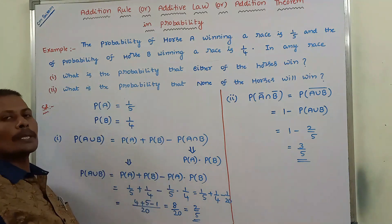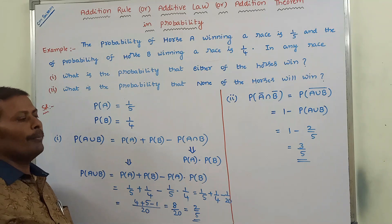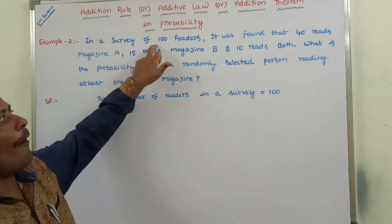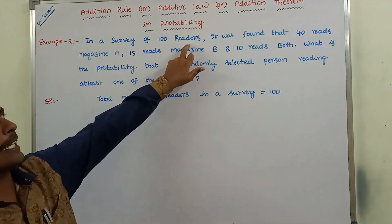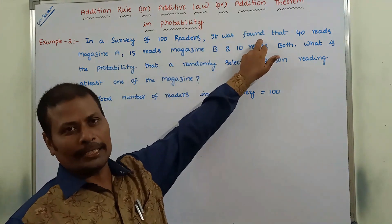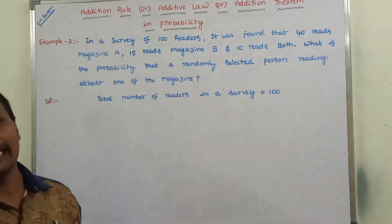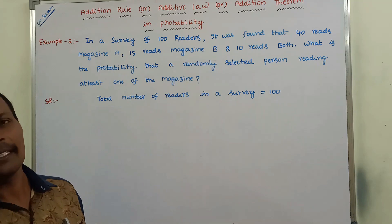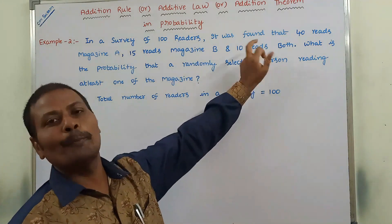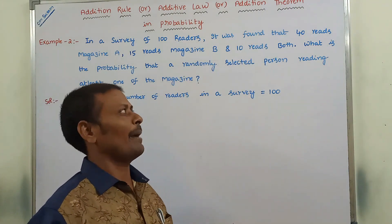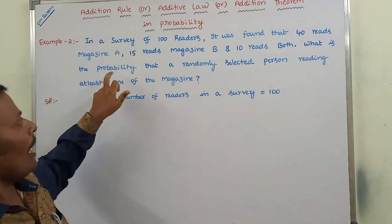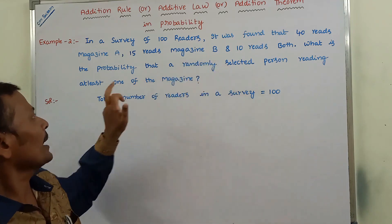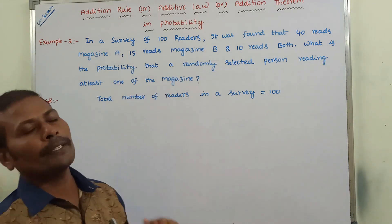The second problem: in a survey of 100 readers, it was found that 40 read magazine A, 15 read magazine B, and 10 members read both magazine A and magazine B. What is the probability that a randomly selected person reads at least one of the magazines?